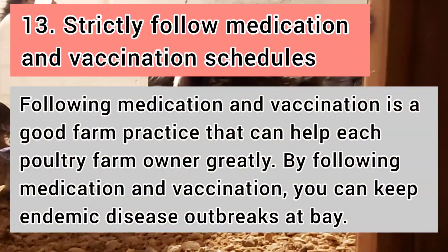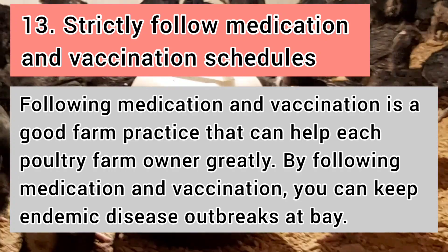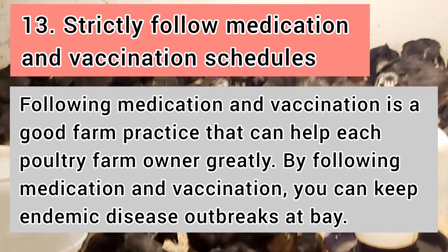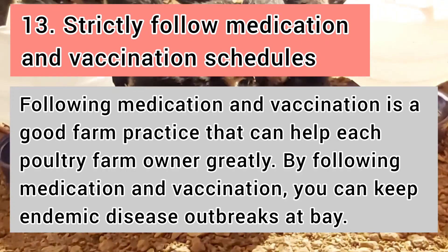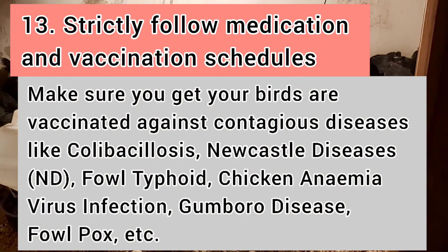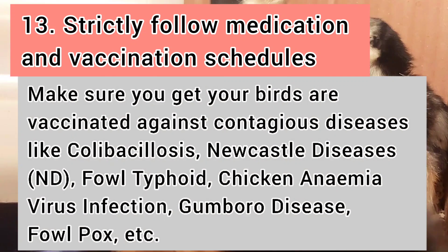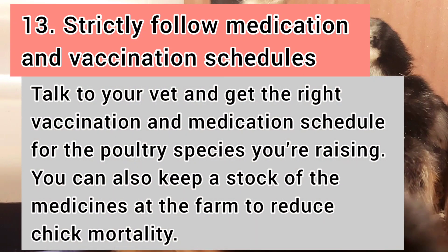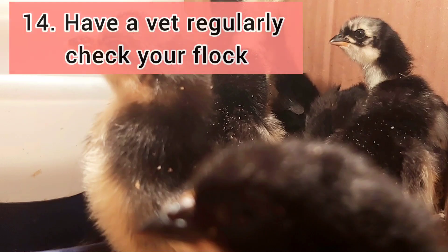Number thirteen: strictly follow medication and vaccination schedules. Following medication and vaccination is good farm practice that can help keep endemic disease outbreaks at bay. Make sure your birds are vaccinated against contagious diseases like colibacillosis, Newcastle disease, infectious bronchitis, fowl typhoid, chicken anemia virus infection, Gumboro disease, and fowl pox. Talk to your vet to get the right vaccination and medication schedule for the poultry species you are raising.